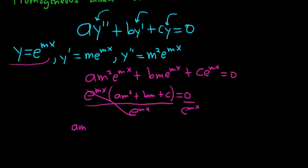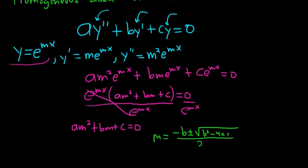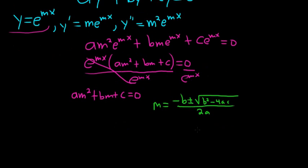We have a m squared plus b m plus c equals 0. Using the quadratic formula, this gives us m equals negative b plus or minus the square root of b squared minus 4ac all over 2a. So now we can investigate the three different types of solutions that we would get from a quadratic equation. So there are three cases. The first case would be if you get distinct real roots, like 2 and 3, 4 and 5.